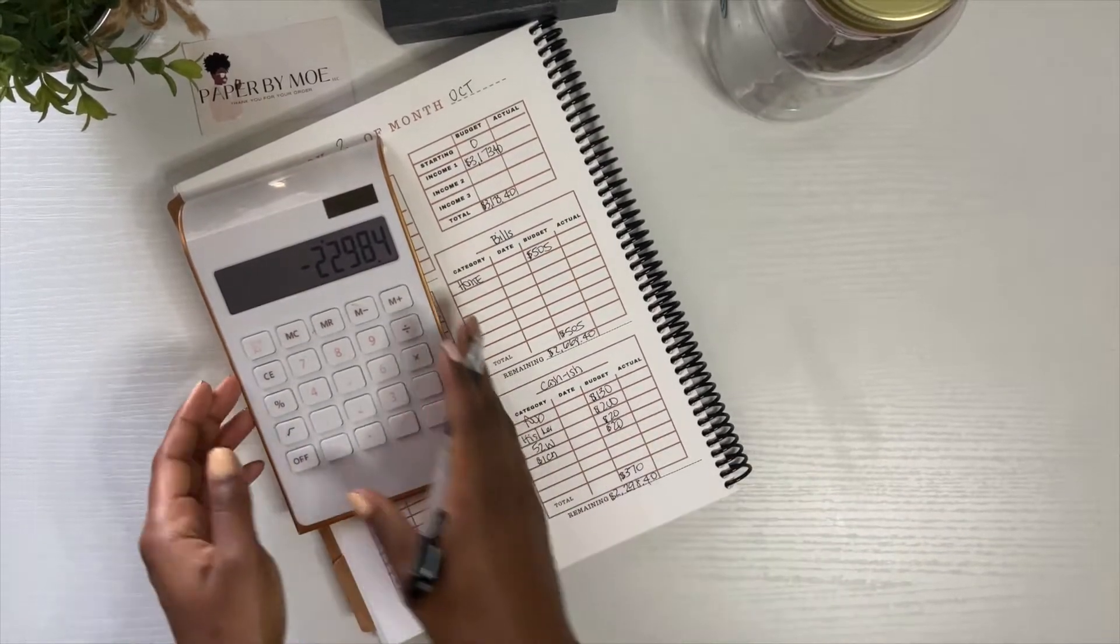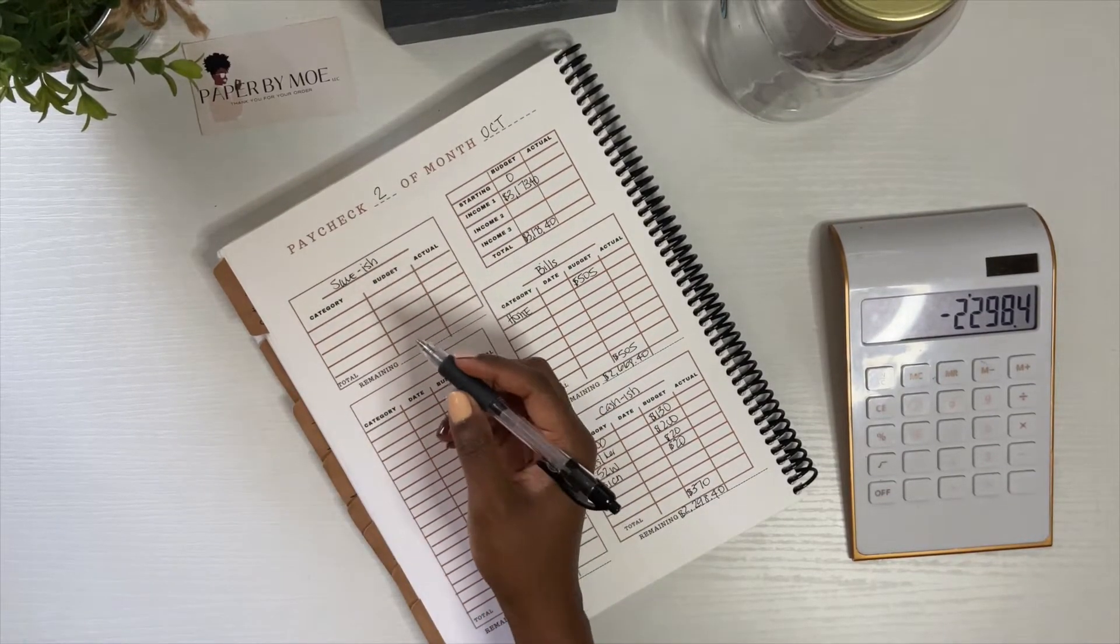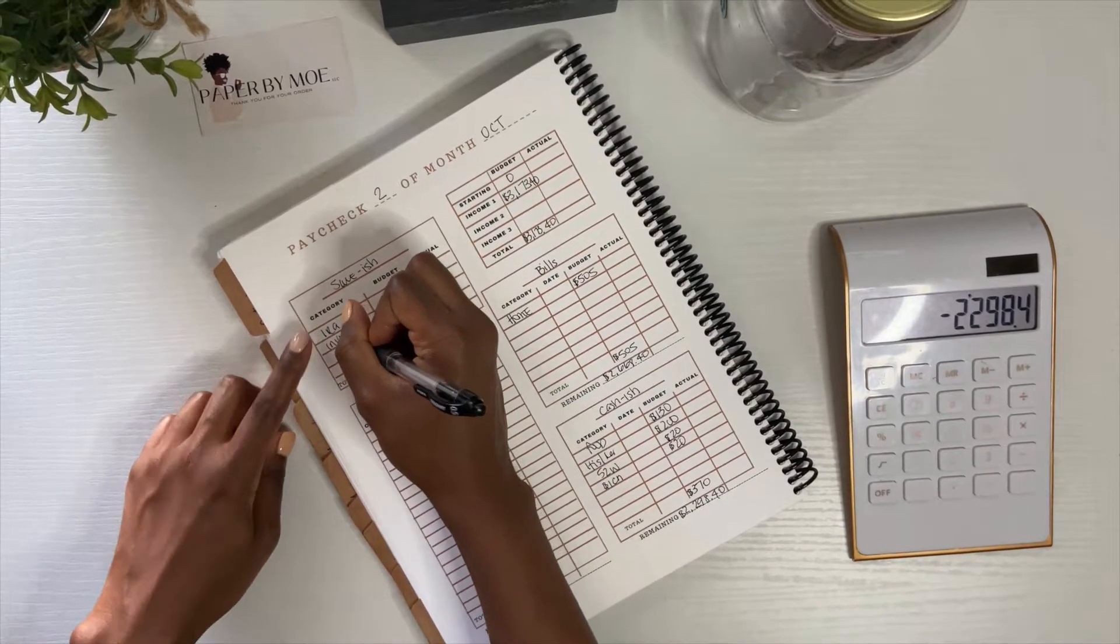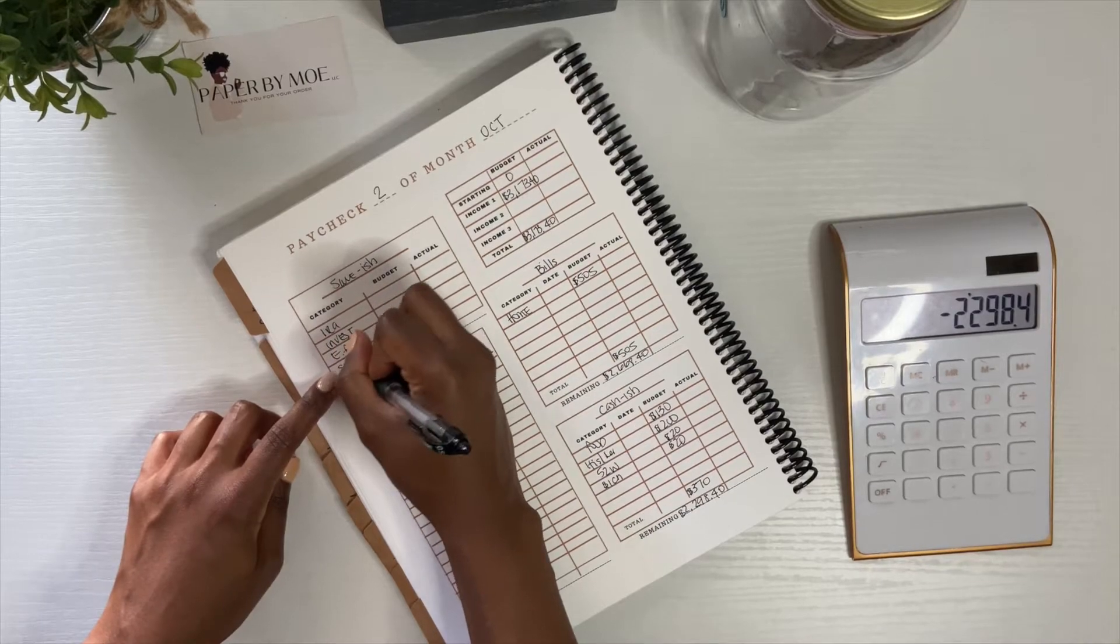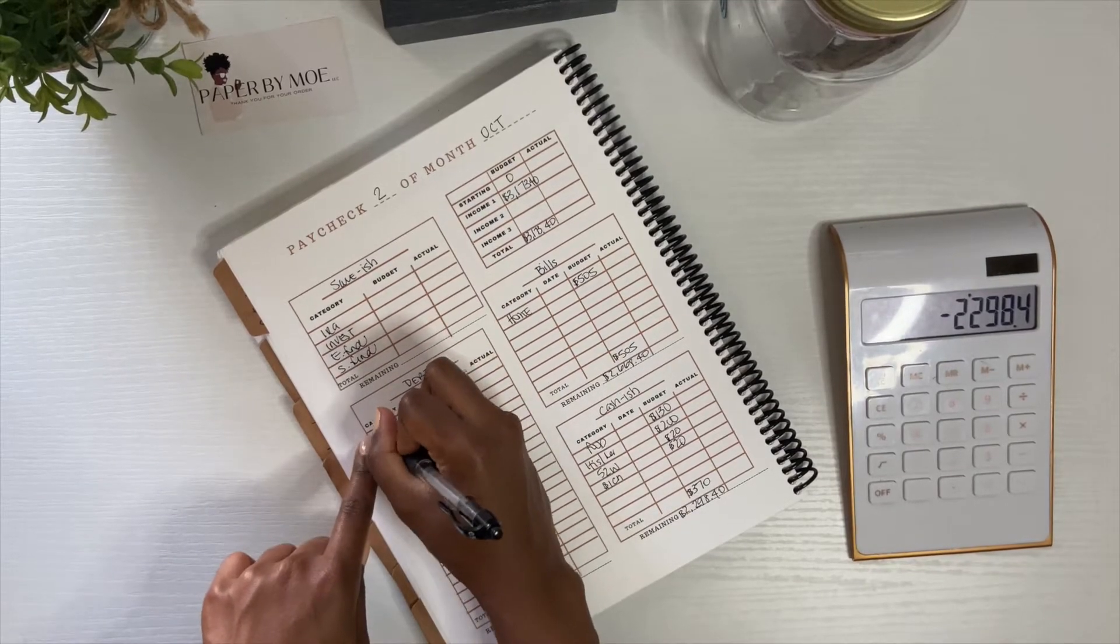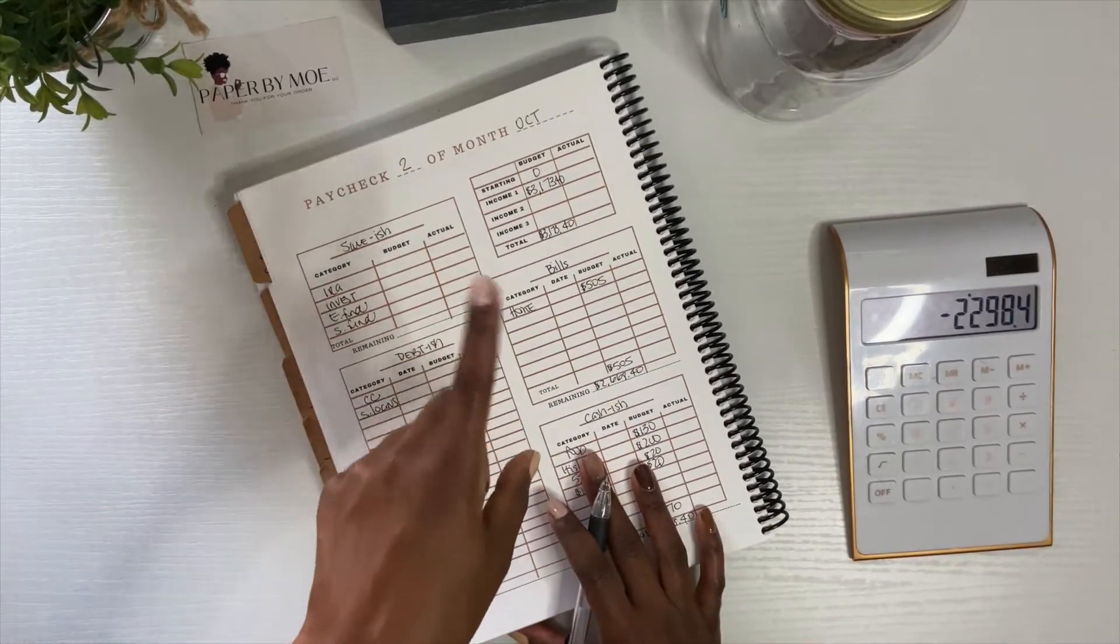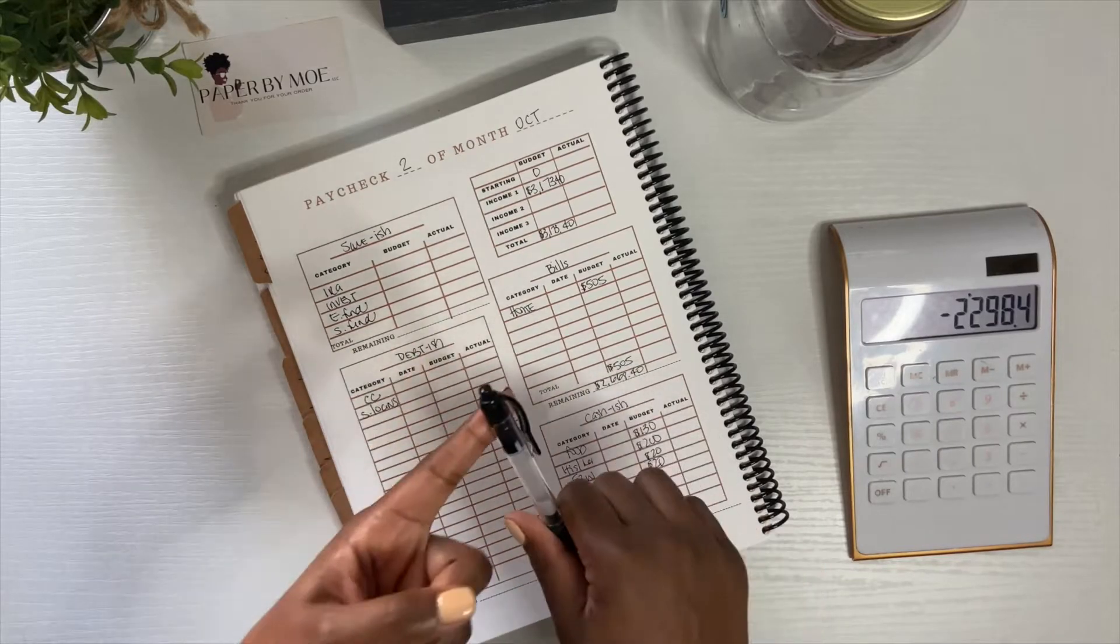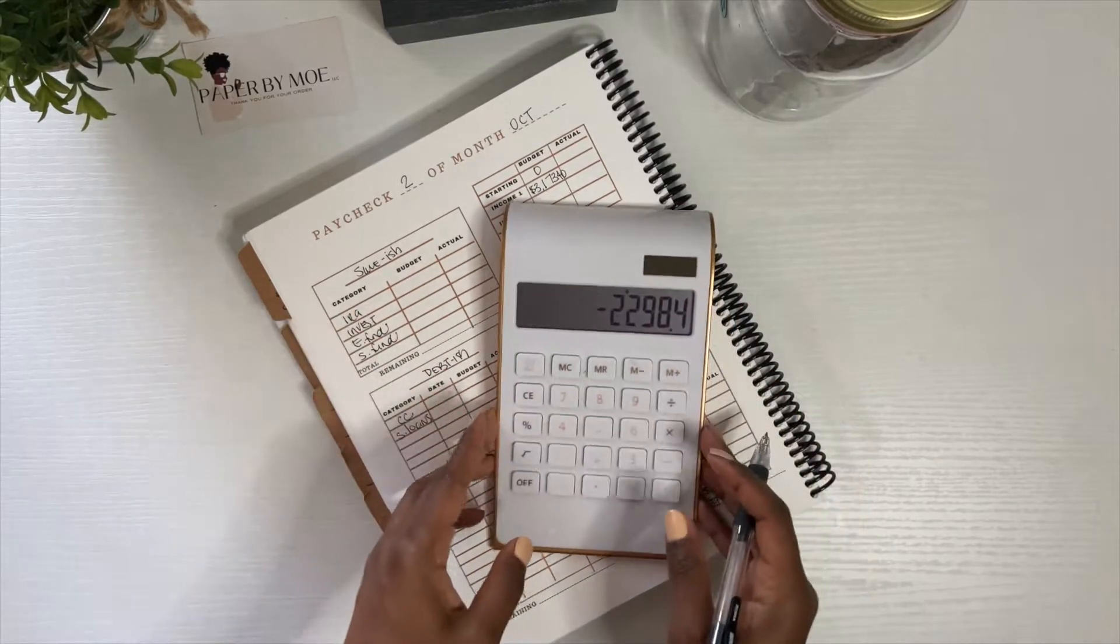Now we're gonna move over here to save-ish. For save-ish we have IRA, we have my investment account, and then we have my emergency fund. I think that's all I'm gonna do over here. Oh and then I'm gonna do my sinking fund. And then this right here is gonna be debt-ish. I'm gonna do my credit card and I'm gonna do my student loans. You're like why credit card girl, you just paid it off? I put my flight, hotel stay, all of that stuff on my credit card. First of all, I have a Delta credit card and you want the points.